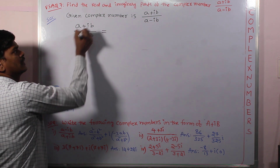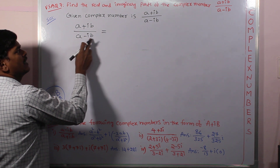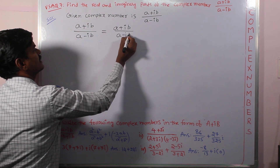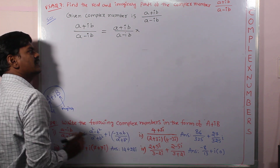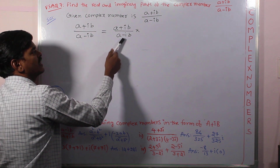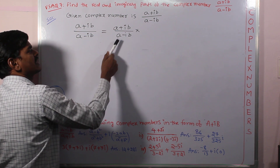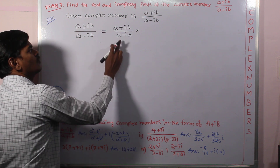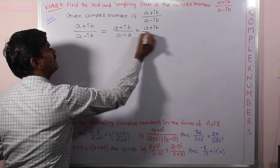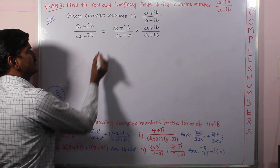Division of complex numbers can be done by using the rationalization process — that is, rationalization of the denominator. Rationalization means multiplying and dividing by the conjugate of the denominator. In the denominator we have (a - ib), so its conjugate is (a + ib). So we multiply and divide by (a + ib). This is known as the rationalization process.